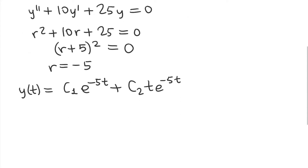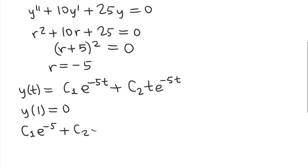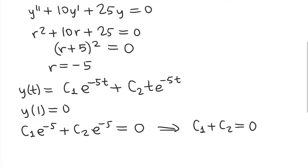The first condition is y(1) = 0. If I plug in t = 1 into y(t), I get c1·e^(-5) plus c2·(1)·e^(-5) equal to 0. I'll simplify this by multiplying both sides by e^5, which gives us c1 + c2 = 0 — nice and simple.